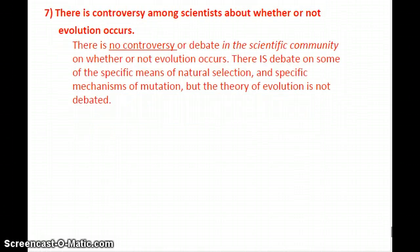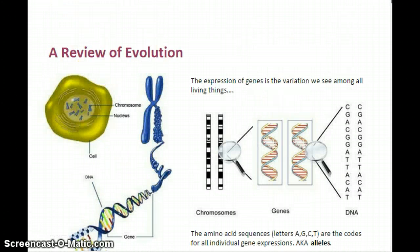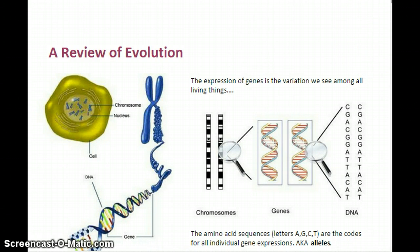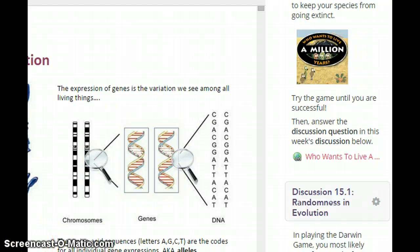That's our summary of evolution and natural selection. This week we're going to be exploring this in further detail. Please email me if you have any questions about any of these details or anything from your biology classes you want to review. Enjoy the Darwin game — 'Who Wants to Live a Million Years' — it's pretty fun and it's on page 15.1. And of course there's discussion.